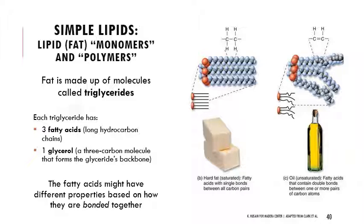When thinking about the structure of lipids, those are made up of monomers called triglycerides. Each triglyceride — tri meaning three — has three fatty acids, which are those long hydrocarbon chains. We have three fatty acids attached to one glycerol, which has three carbons that attach to those fatty acids. Depending on how the bonds are in the fatty acids — whether there are double, triple, or single bonds — it makes them saturated or unsaturated. If it's all single bonds, it's a saturated fat, a hard fat like coconut oil or butter. Something like olive oil is more unsaturated — it has more double bonds — so it's not fully saturated with hydrogen.